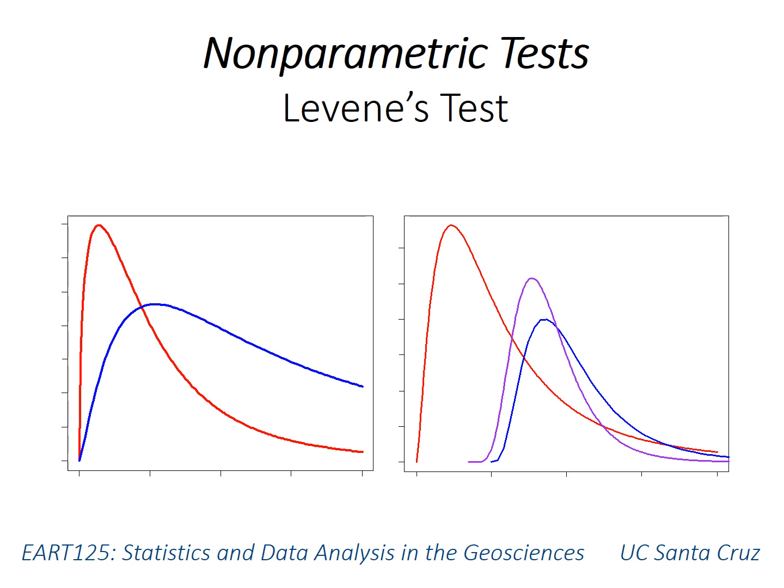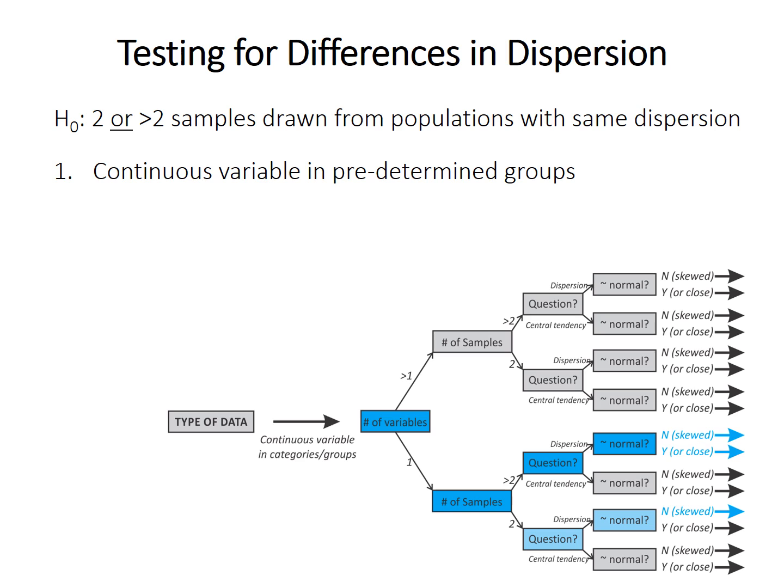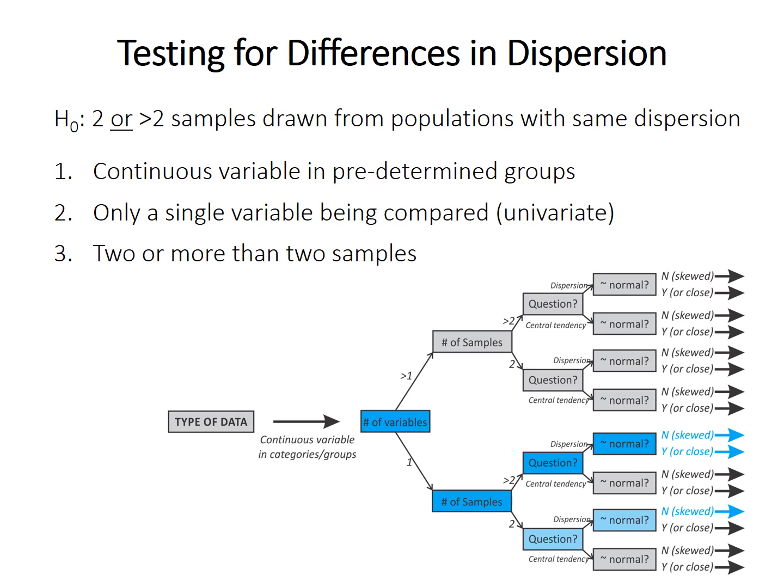This video covers Levene's test and the related Brown-Forsythe test, both of which are nonparametric tests used to look at differences in dispersion. The null hypothesis of these tests is that the samples come from populations with the same dispersion. Both tests require a continuous variable in predetermined categories or groups or samples. They're both univariate tests, but can be used for two samples or for more than two samples, and the purpose is to compare dispersion.